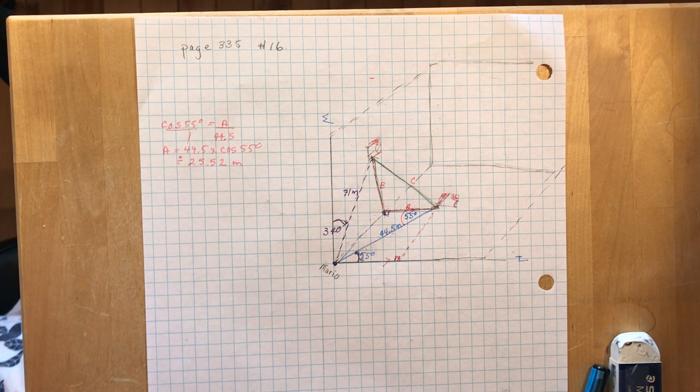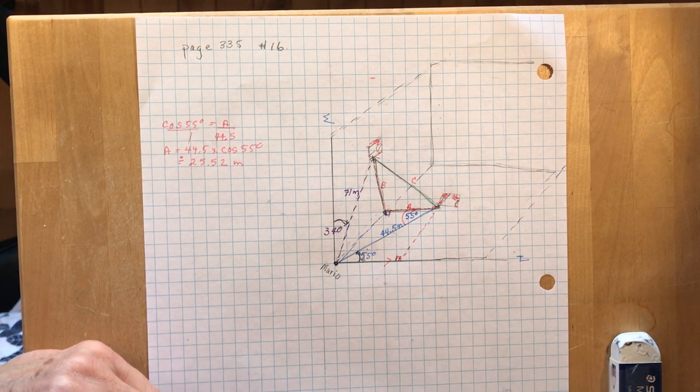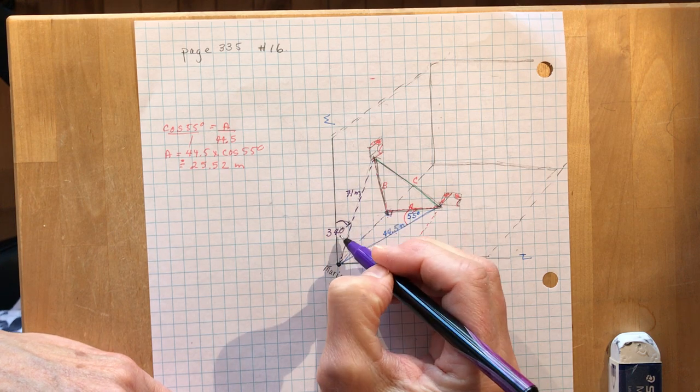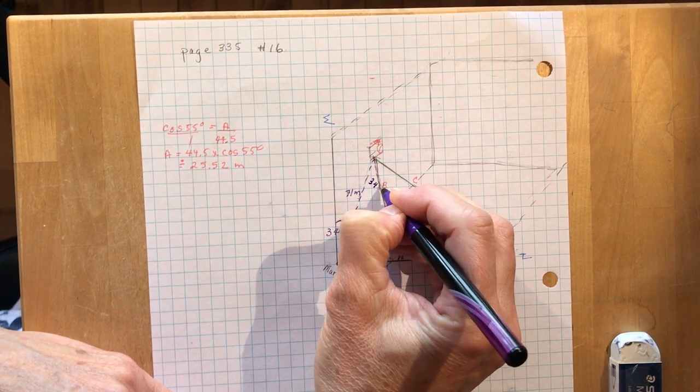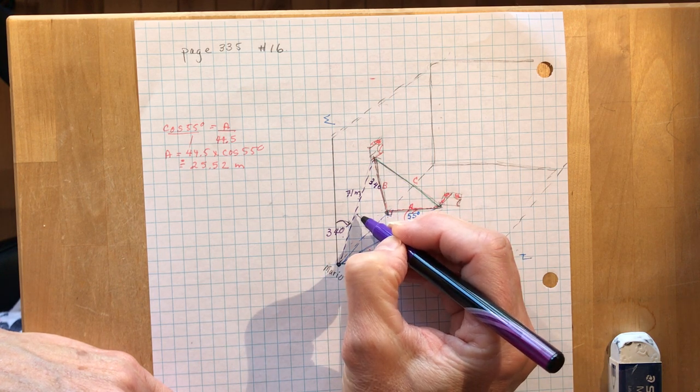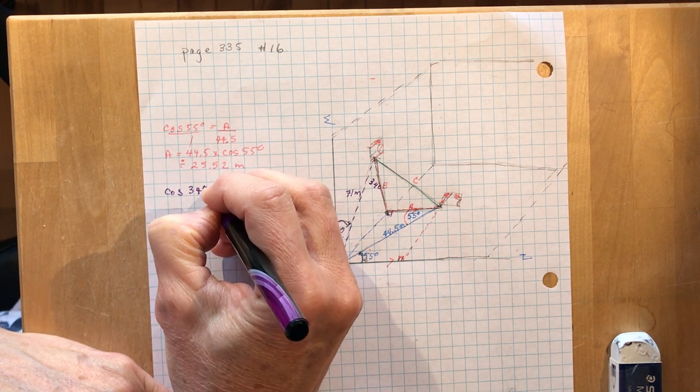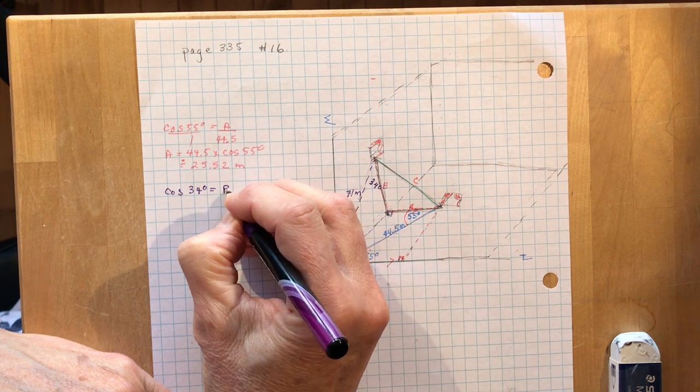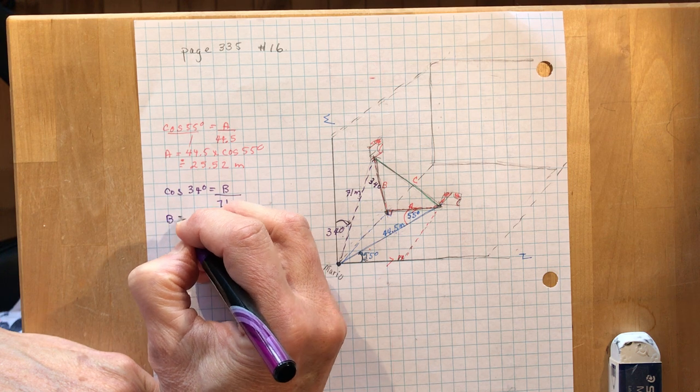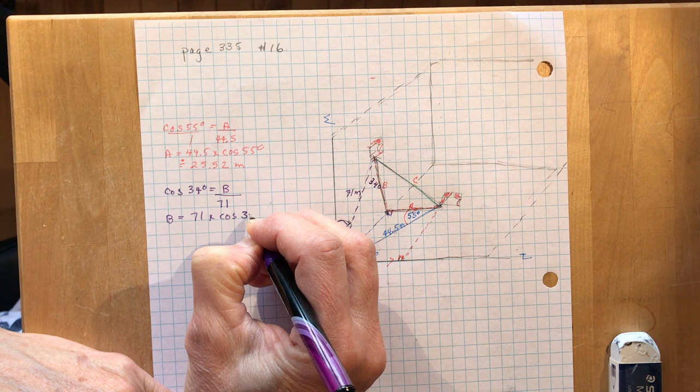Okay, so now I'm going to do the very same thing to calculate the other side here, the side B. So again I have a Z pattern. So boom, boom, boom. This is 34, this is 34 degrees up here. 34 degrees, I'm trying to find the adjacent and I have the hypotenuse. So the cos of 34 degrees is going to be equal to B divided by 71. So B is 71 times the cos of 34 degrees.